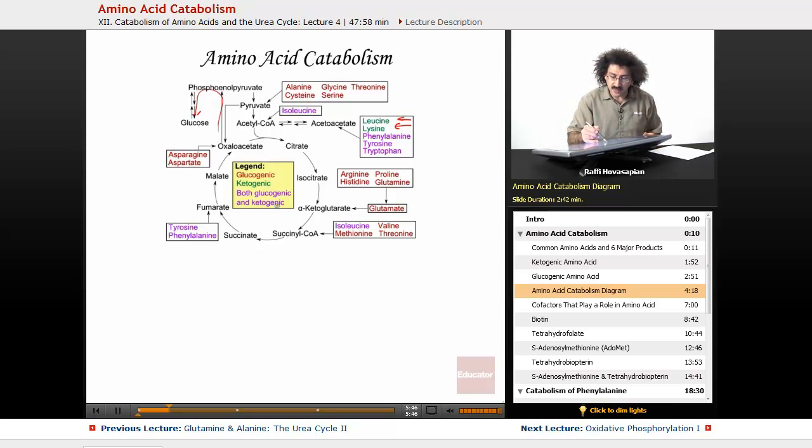The ones in purple are both glucogenic and ketogenic. Phenylalanine, tyrosine, tryptophan, and isoleucine. Phenylalanine is the molecule we're actually going to talk about specifically in a bit. You can have amino acids that are both glucogenic and ketogenic. You have your fundamental molecules that you're breaking down into: alpha-ketoglutarate, succinyl-CoA, fumarate, oxaloacetate, pyruvate, and acetoacetate. This is a centralized picture of amino acid catabolism.